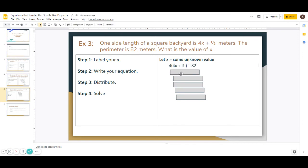And then we have 4 times parentheses 4x plus 1/2 is equal to 82. 4 sides. So you're going to multiply 4 times one side. And then you're going to distribute. So 4 times 4x is 16x. 4 times 1/2 is 2.